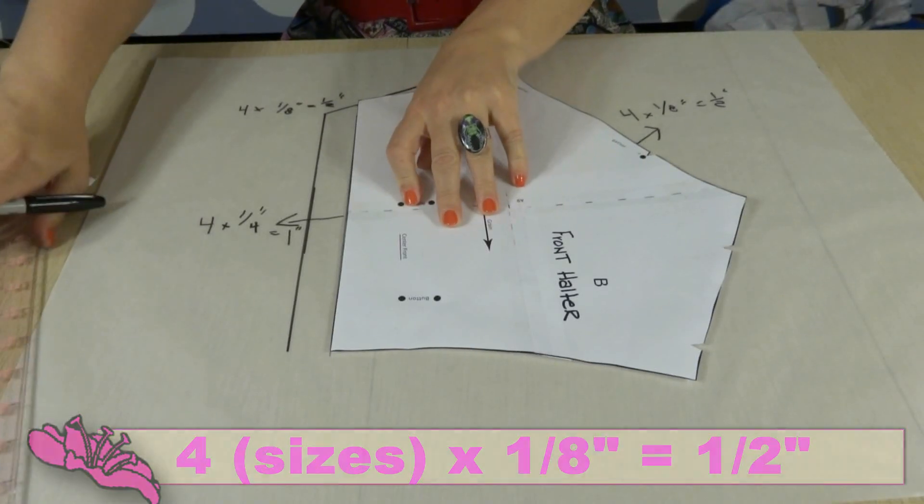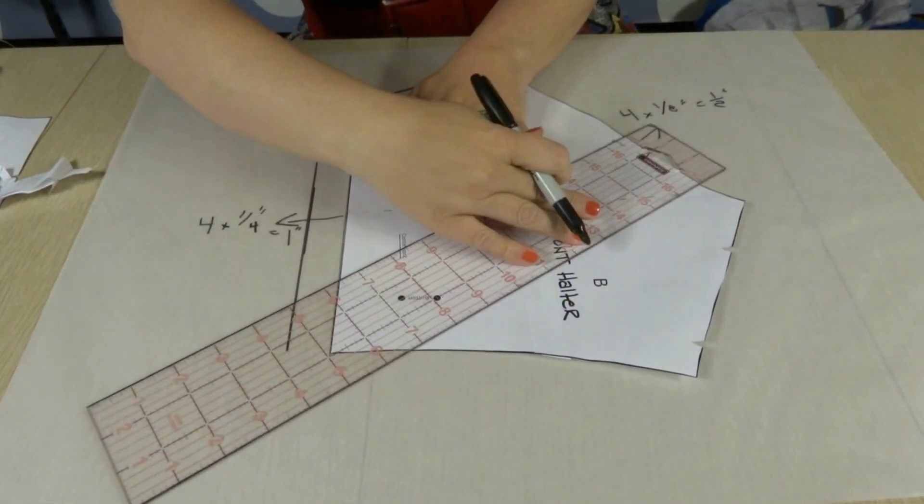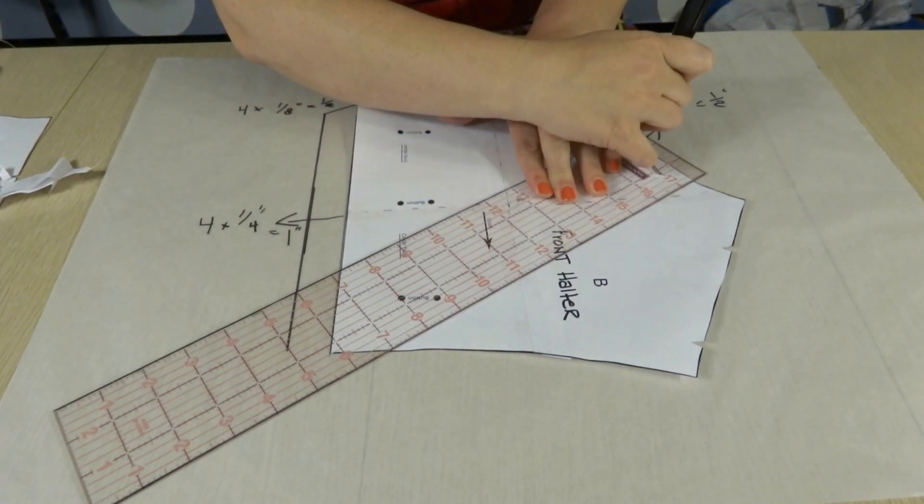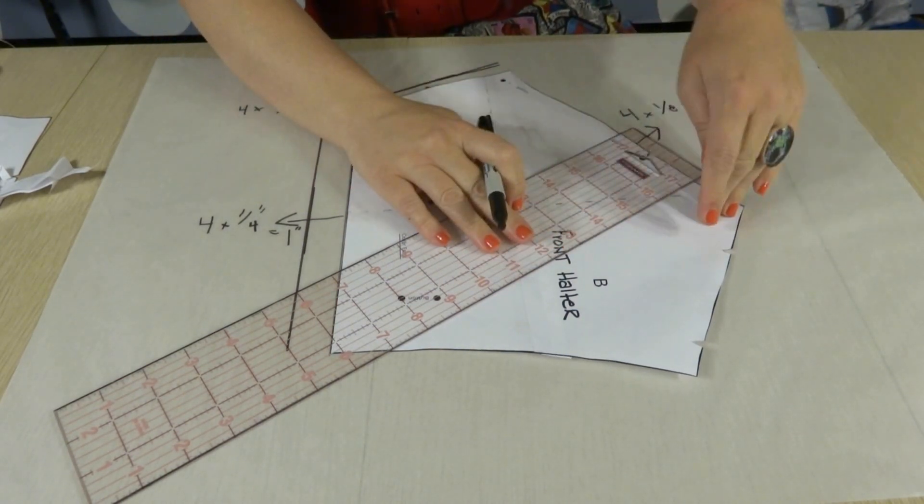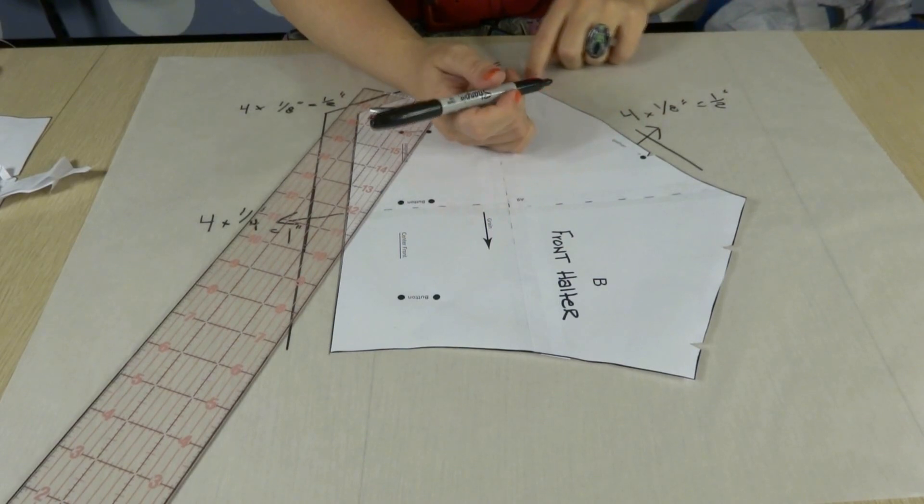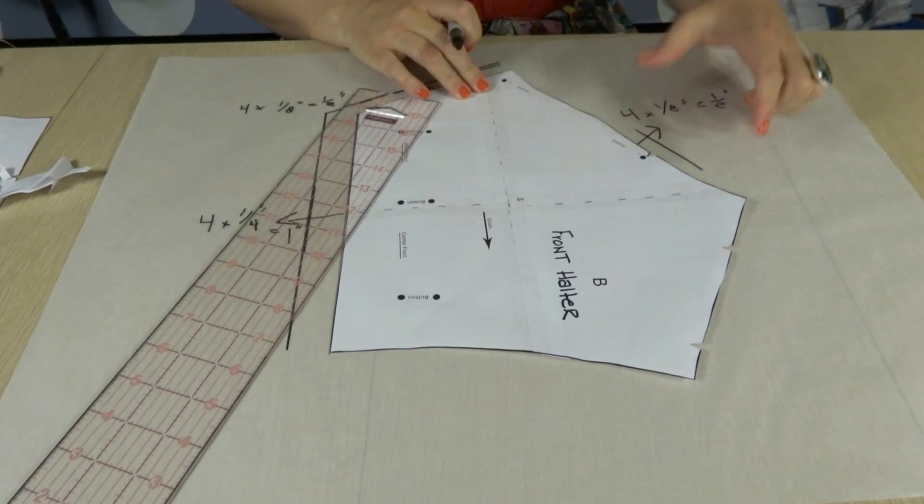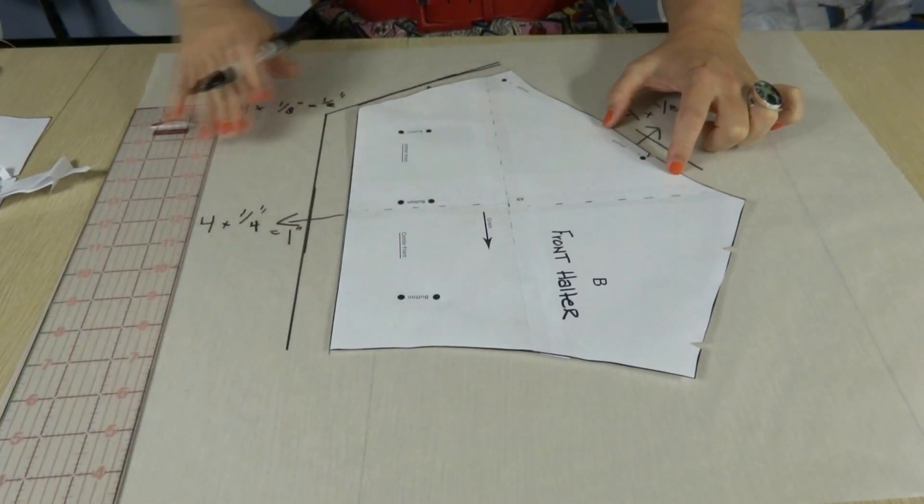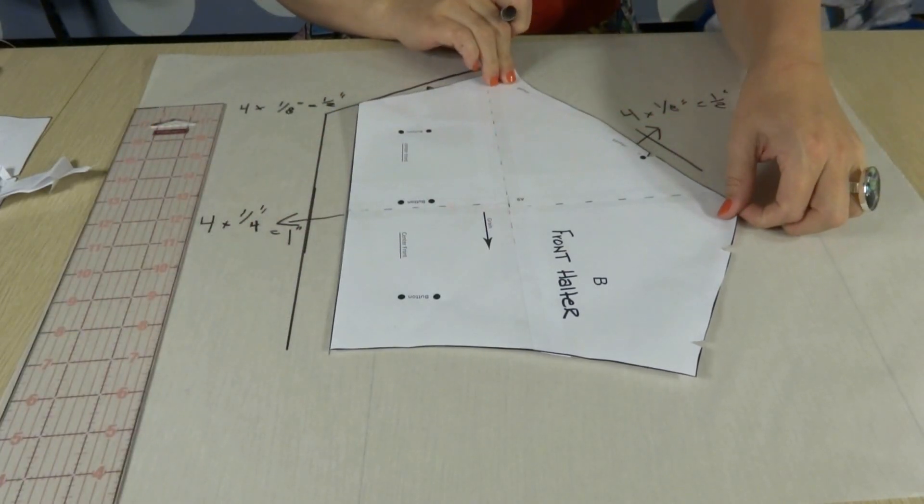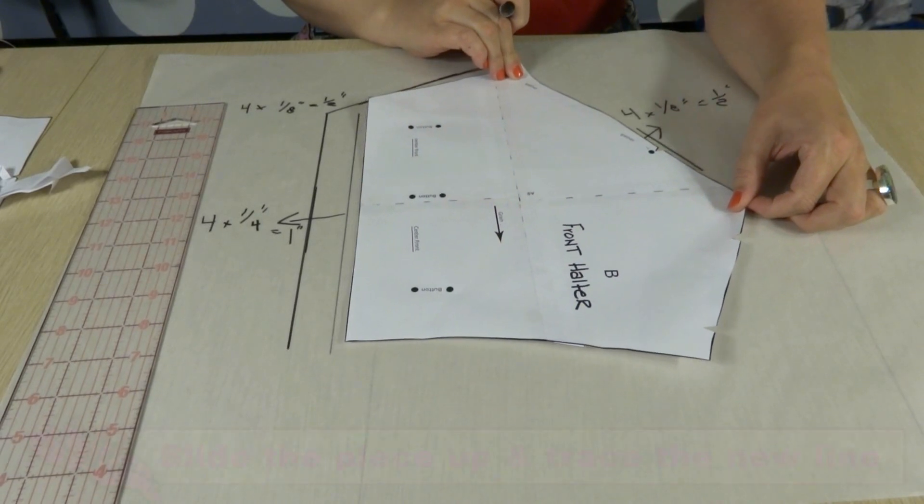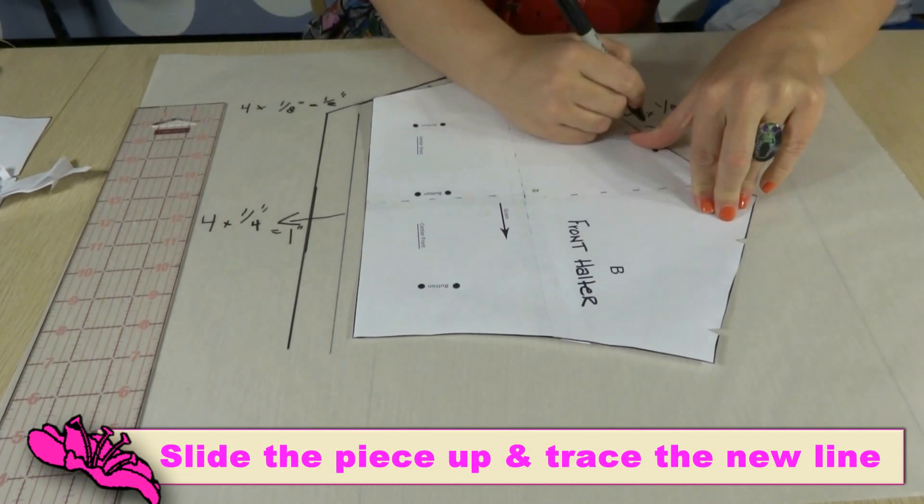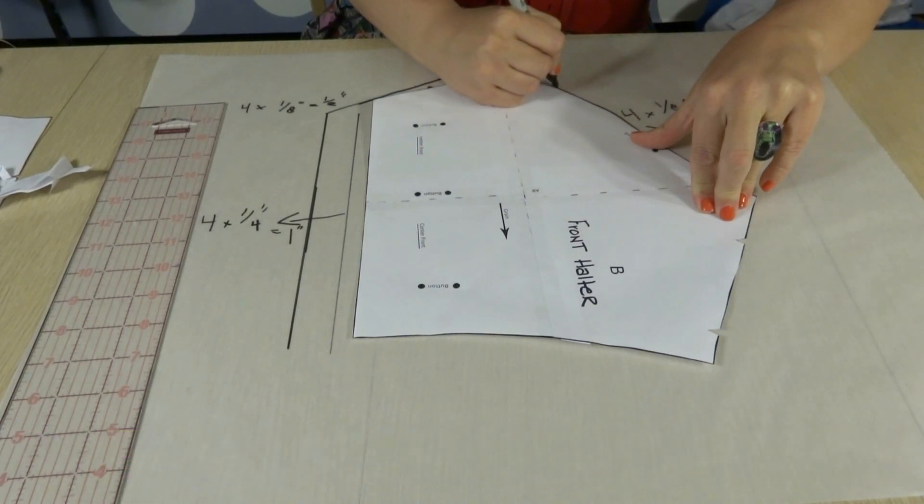So again, center line, take our ruler, line up. There is our half of an inch. We're going to notice that it kind of dips and sways here. So I took that half an inch directly from the area that is straight. All we're going to do is hold on to that and pull that up to the new line and then take your marker and just trace along the pattern.